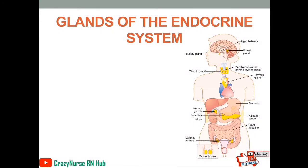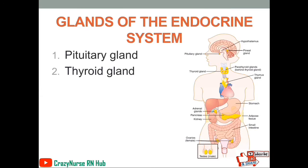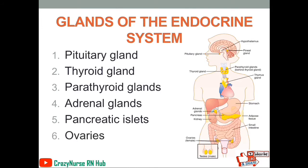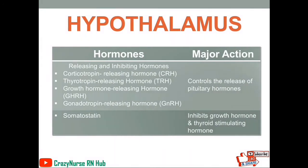Now let's discuss the different glands of the endocrine system. We have the pituitary gland, thyroid gland, parathyroid glands, adrenal glands, pancreatic islets, ovaries, and testes.